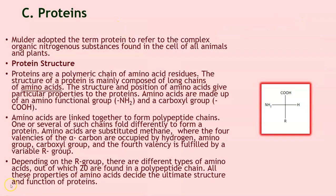Proteins. Mueller adopted the term protein to refer to the complex organic nitrogenous substances found in the cells of all animals and plants. Proteins are polymeric chains of amino acid residues. The structure of a protein is mainly composed of long chains of amino acids, and the structure and position of the amino acids give particular properties to the protein.